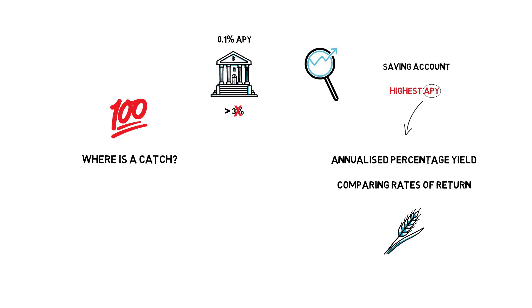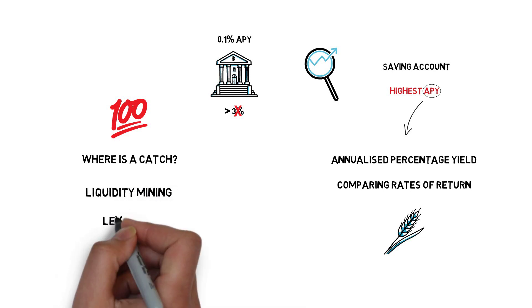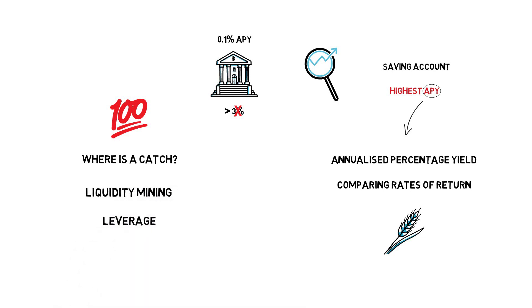There are three main elements that make such returns possible: liquidity mining, leverage, and risk. Let's cover all of them before we jump into some common strategies.